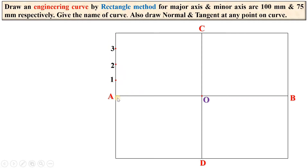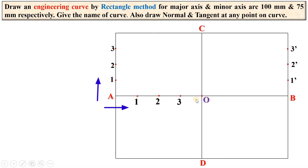Give the names as 1, 2, 3 on one side, and similarly on the other side divide into four equal divisions and name them 1 dash, 2 dash, 3 dash. Now divide this distance into four equal parts as well — if you divided the other side into five equal parts, then this should also be five equal parts. Number them 1, 2, 3. Keep in mind the numbering is in ascending order from each reference point on both sides.